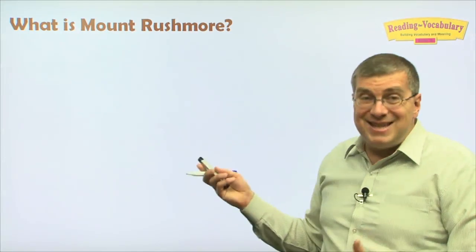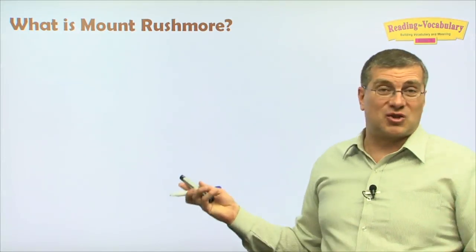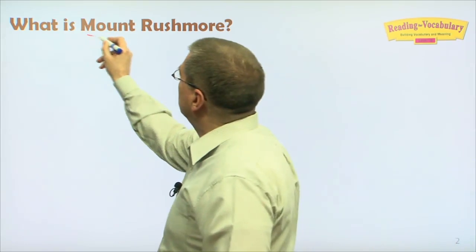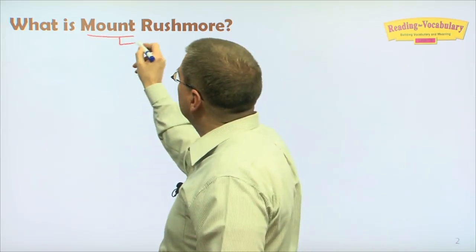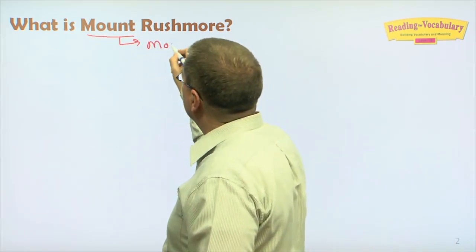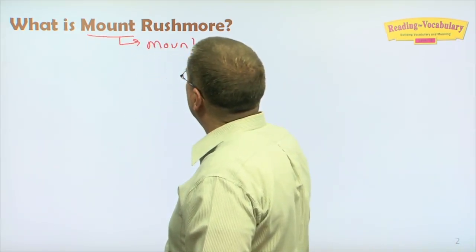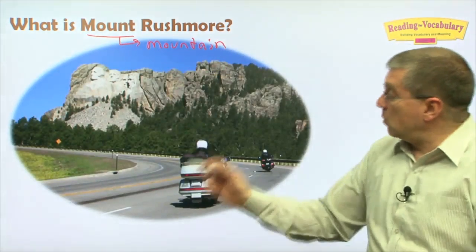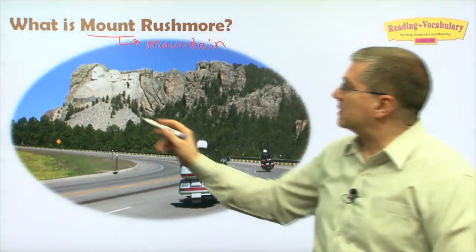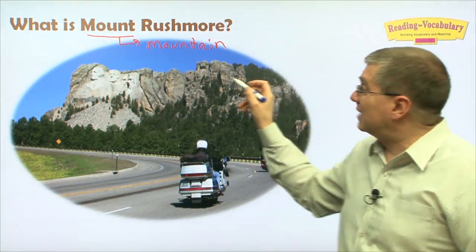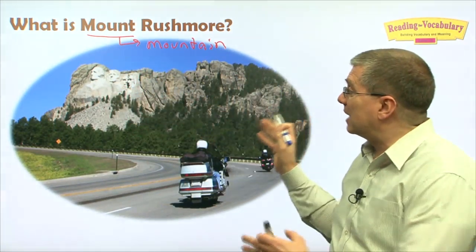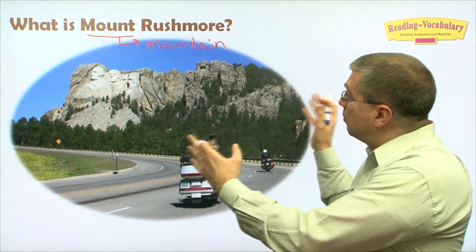Of course we have to ask, what is Mount Rushmore? There's a little clue — mount means mountain. And as we can see, this is a mountain. It's one big rock. That's amazing. Look at how big it is.